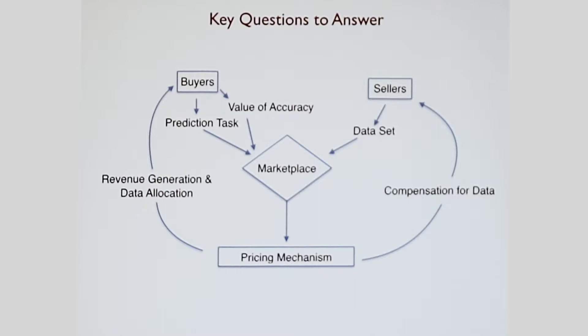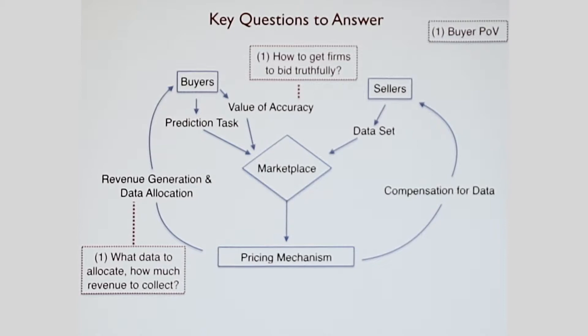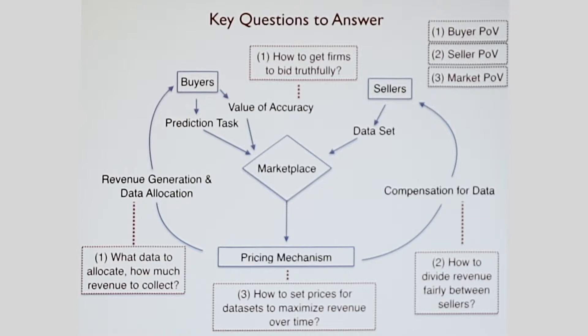Now that we've given you the architecture and a little bit of formalism, what are the key questions you need to analyze to see whether this marketplace is going to be robust? From the buyer point of view, we need to decide how to make them bid truthfully and what data to allocate to them and how much revenue to collect. From the seller's point of view, if $100 worth of revenue was generated, what's a fair way of dividing this up amongst all the different sellers? Lastly, from the market's point of view, how should they set prices so they can maximize revenue from these data sets over time?